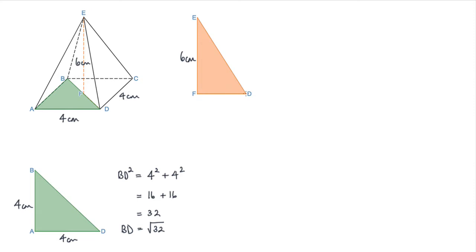Now we know that FD is actually half the length of BD. So FD is the square root of 32 divided by 2.